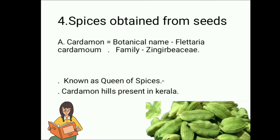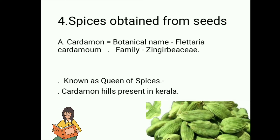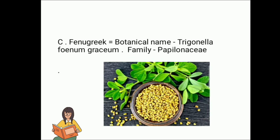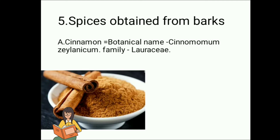Spices obtained from seeds. A. Cardamom — botanical name Elettaria cardamomum, Family Zingiberaceae. Known as queen of spices. Cardamom hills are present in Kerala. B. Bengal Cardamom — botanical name Amomum aromaticum, Family Zingiberaceae. C. Fenugreek — botanical name Trigonella foenum-graecum, Family Papilionaceae.